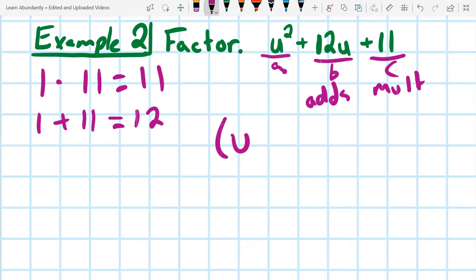Sweet. So we found a number that multiplies to give me C and adds to give me B. And that's exactly what we're looking for. So we can go ahead and write our answer. U plus 1 and U plus 11.